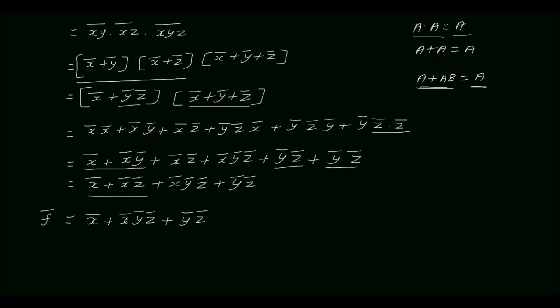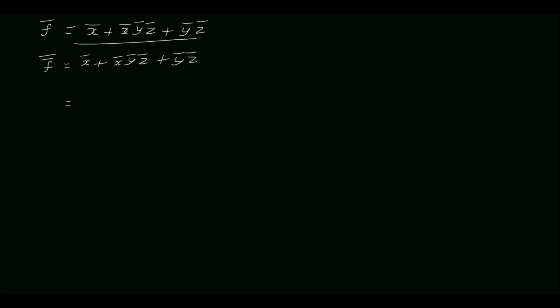On the left hand side we have f complement. Now we need to find f. So take the complement again: f complement complement equal to (x complement plus x complement y complement z complement plus y complement z complement) complement. Apply De Morgan's theorem.